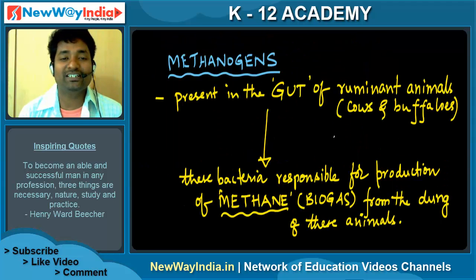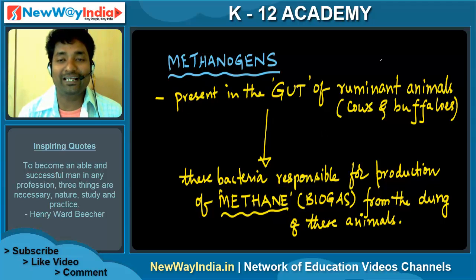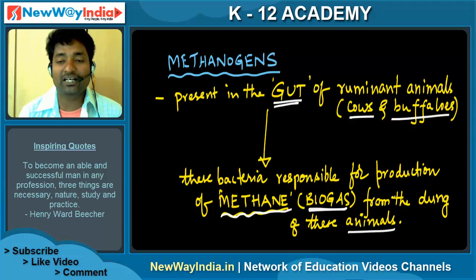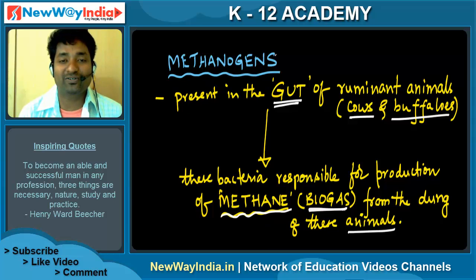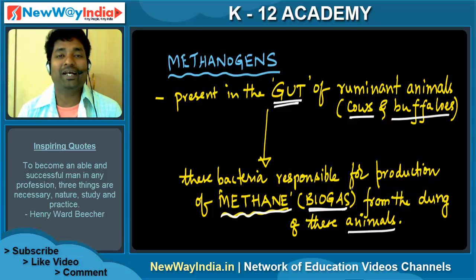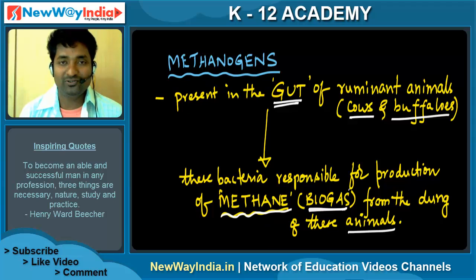Methanogens are present in the gut of ruminant animals like cows and buffaloes. Because of the presence of these methanogens bacteria, they are responsible for the production of methane or biogas from the dung of these animals. So from cow and buffalo dung, we can generate biogas because of the presence of methanogens. You may get an application-oriented question: why can we make biogas from the dung of cows? You have to write: because of the presence of methanogens, which is a bacteria.